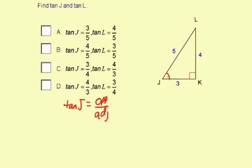So if we have angle J here, the side opposite from angle J is 4. So the tangent of J is going to equal 4 over something.